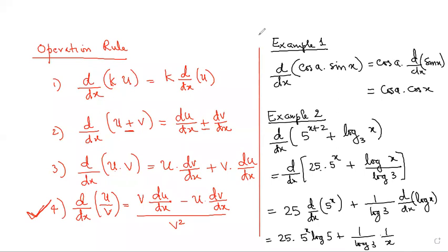First point: when you are differentiating with respect to x, cos(a) is a constant. When you have a constant with a function, remove the constant outside and differentiate the function. How do you decide it's a constant? The variable here is x. If x is not present in it, then it's a constant — so remove it outside and differentiate the function.